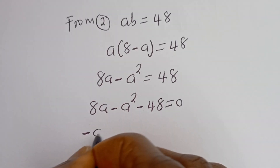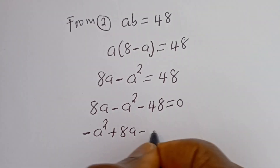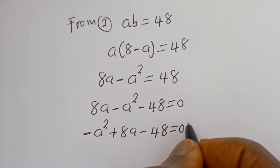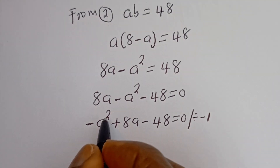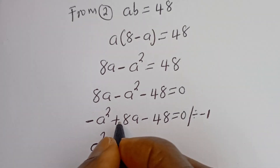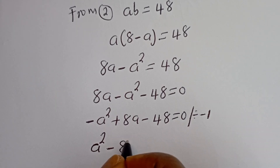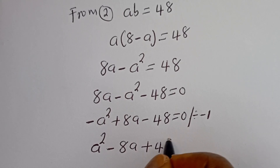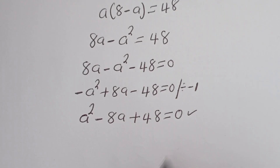We have 8A minus A squared minus 48 is equal to 0. Let's put this in standard form. We have minus A squared plus 8A minus 48 equals 0. Dividing all terms by minus 1 gives us A squared minus 8A plus 48 is equal to 0. This is a quadratic equation.